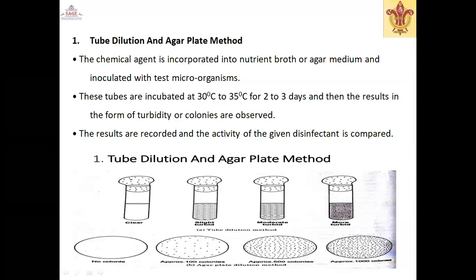Tube dilution and agar plate method: the chemical is incorporated into the nutrient broth or agar medium, then inoculated with a test microorganism. These tubes are incubated at 30°C to 35°C for 2 to 3 days. Results are observed in the form of turbidity or colonies — ranging from clear, to slightly turbid, to moderately turbid, to more turbid — and the results are verified accordingly.